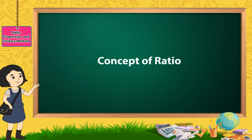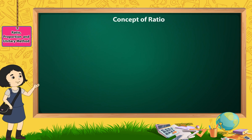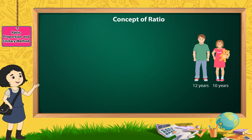Concept of Ratio: We often come across situations where we need to compare two quantities in terms of their magnitudes. Let's compare the ages of Ali and Gurpreet, who are 12 and 10 years old. This comparison could be done in two ways.